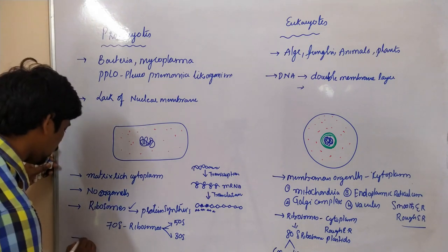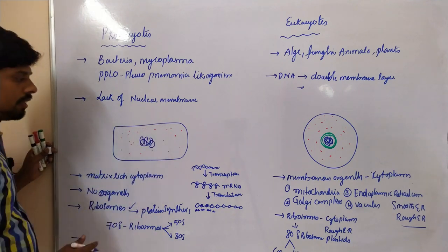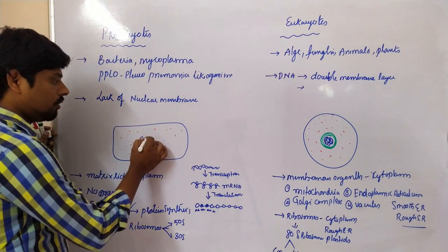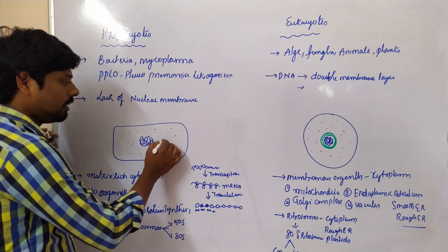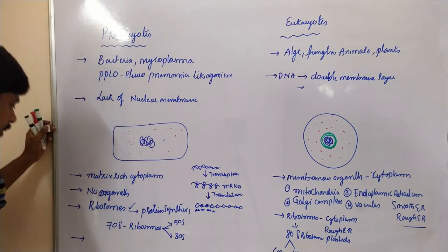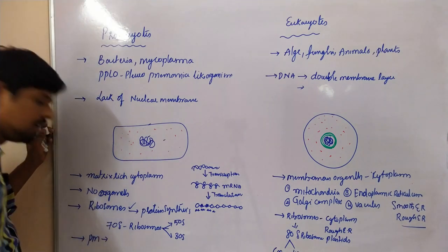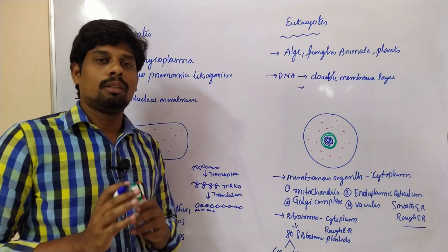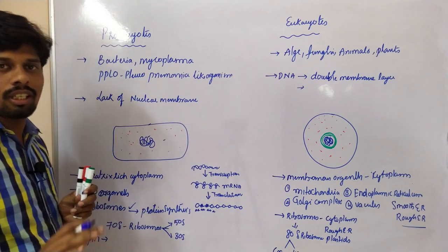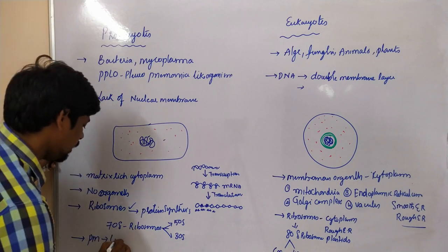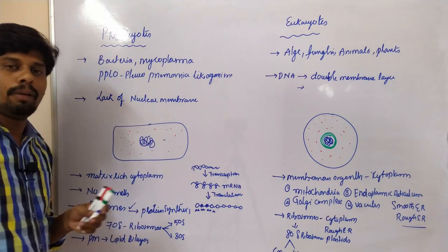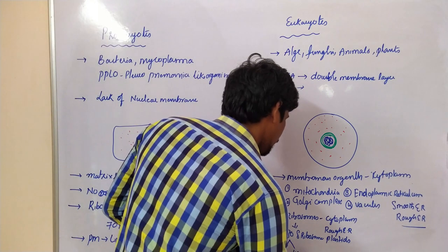Coming to the next point: the plasma membrane. We have completed nucleus, cytoplasm, and ribosomes. The plasma membrane in both eukaryotes and prokaryotes is the same — both cells have the same function and structure, which is the lipid bilayer. In both cells, a lipid bilayer is present.